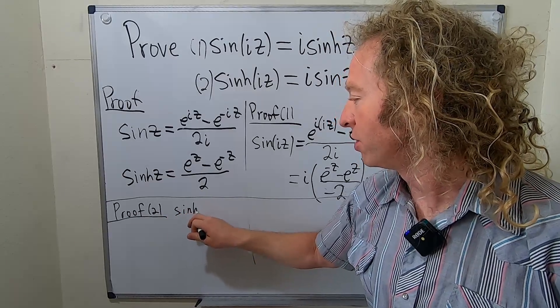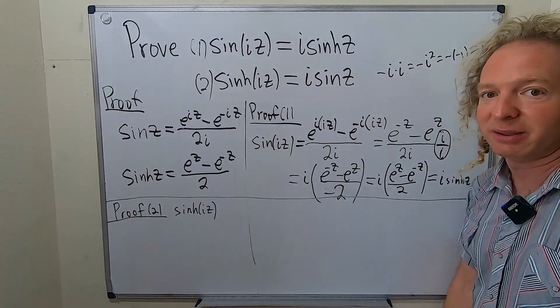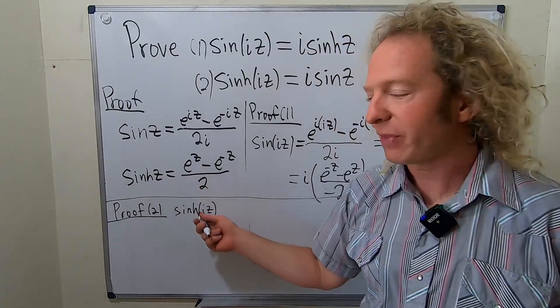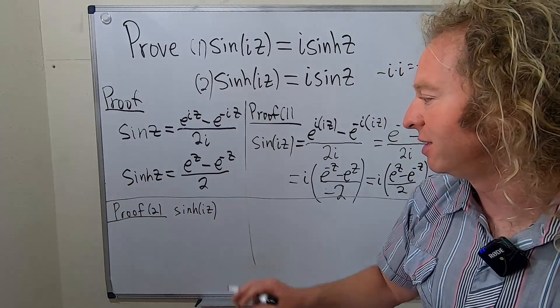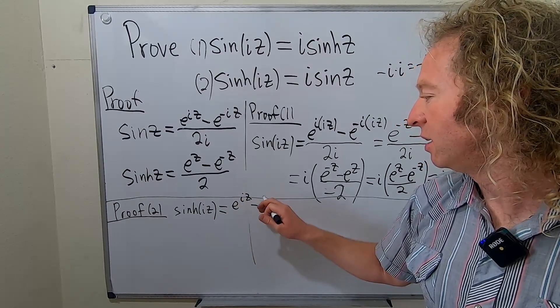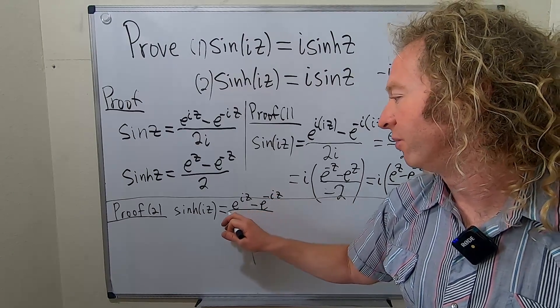So we'll start with sinh iz and we'll show it's equal to i sin z. So again, I haven't thought about it. We're just going to do it and hopefully it works. So sinh iz, sinh iz. So basically we just have to look here at the sinh definition and replace z with iz. So this is e to the iz minus e to the negative iz over two.